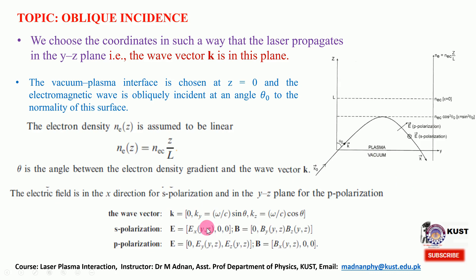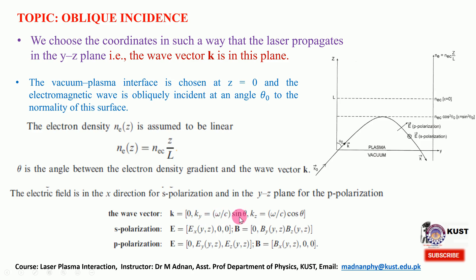For the geometry of this and the coming two lectures: the wave vector k has kx equal to zero. By definition, ky equals omega over c times sine theta, and kz equals omega over c times cosine theta, such that k squared equals ky squared plus kz squared. We will use these definitions throughout.